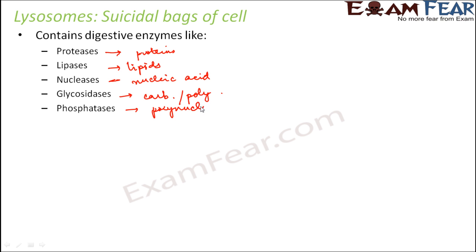Lysosomes can digest almost everything. So if these digestive enzymes were left free in the cytoplasm — the cytoplasm consists of enzymes, carbohydrates, proteins, fats — proteins, lipids, and all these things are present everywhere inside the cell, whether in the cell membrane, the cytoplasm, or any other organelle. So if you set these enzymes free, they will just digest the entire cell itself, and the cell will die.